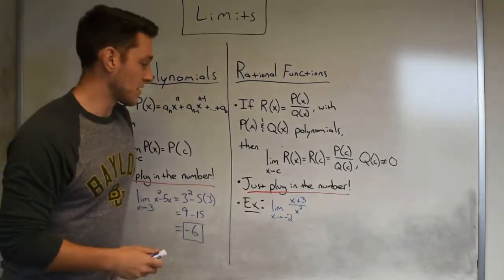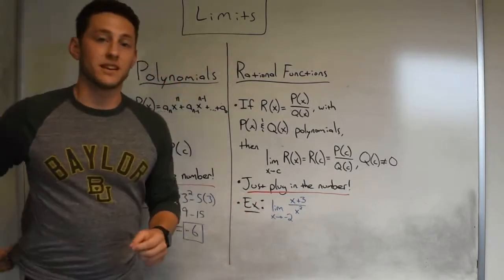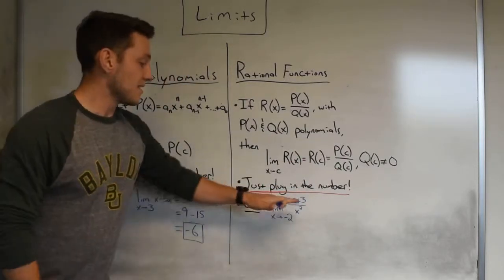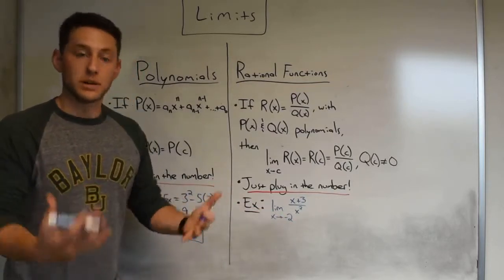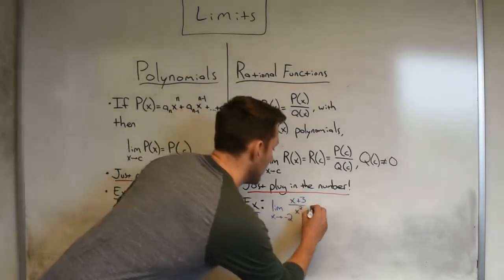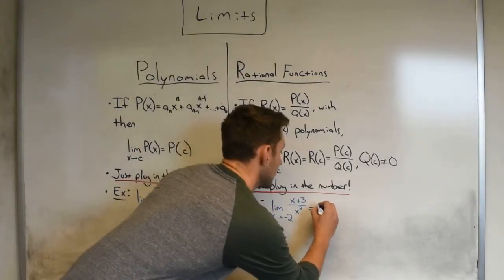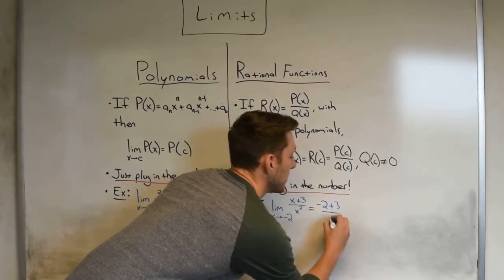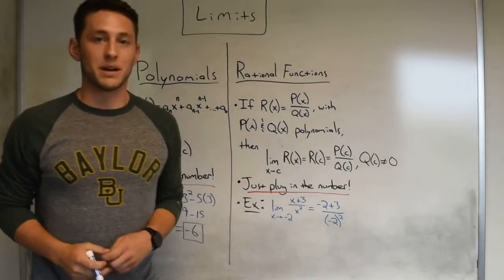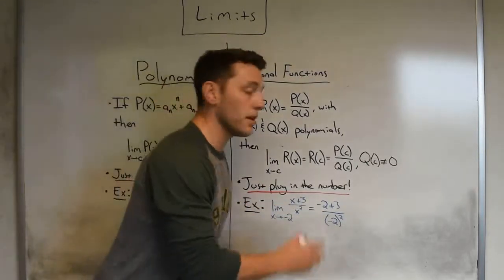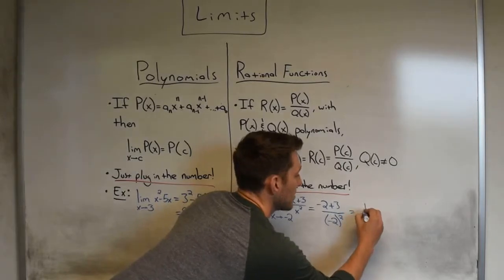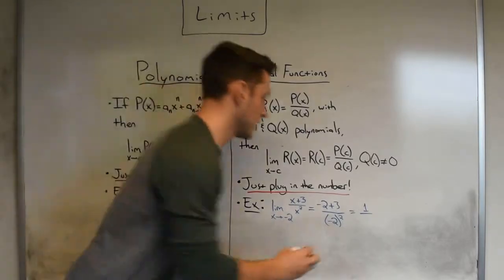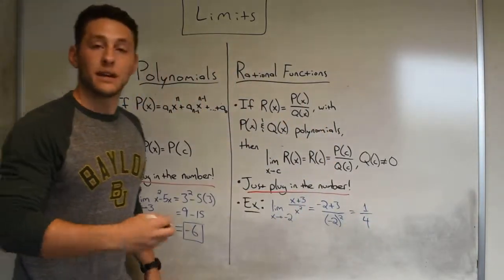For example, with rational functions, let's look at the limit as x approaches negative two of our function (x + 3) divided by x squared. Since it is a rational function — these are both polynomials — all we do is plug in negative two: negative two plus three over (negative two) squared. The top becomes positive one, while the bottom, negative two squared, becomes positive four. So our answer ends up being one fourth.